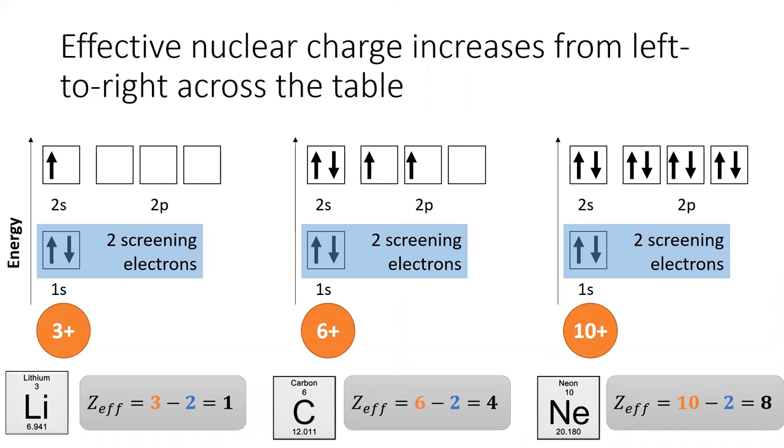Moving to the far right of the table, neon has 10 protons in its nucleus, and still only two inner electrons shielding the outer energy levels. The valence electrons of neon feel an enormous effective nuclear charge of around 8. The noble gases have the highest effective nuclear charges, meaning it is very hard to remove electrons from a noble gas, which explains their chemical stability.